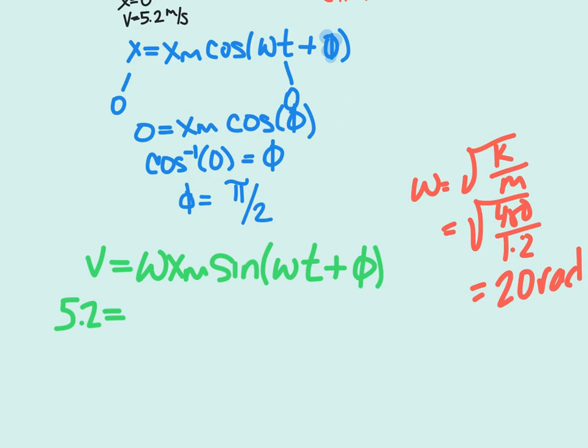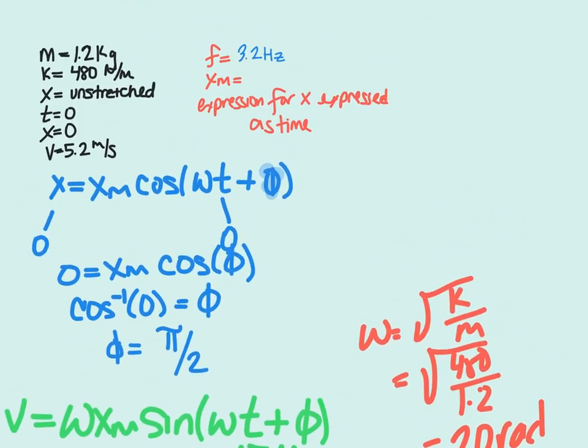We can plug that in. So we have 5.2 equals 20 times our xm sine of phi, because our time is 0. Solving for amplitude, we can substitute phi for pi divided by 2. If we solve for xm, we get that xm equals 0.26 meters.